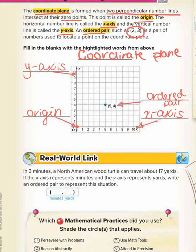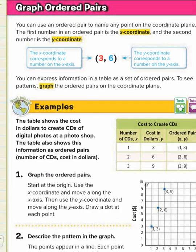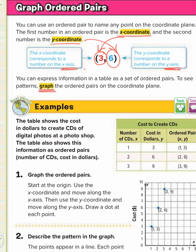We also sometimes call that a coordinate point. Now we're on the top of page 48, we're going to do a few more definitions. At the top it says you can use an ordered pair to name any point on the coordinate plane. The first number in an ordered pair is the x-coordinate and the second number is the y-coordinate. So the first number is the x-coordinate and that corresponds to a number on the x-axis. The second number is the y-coordinate and that corresponds to a number on the number line that is the y-axis. You can express information in a table as a set of ordered pairs. To see patterns, graph the ordered pairs on the coordinate plane.